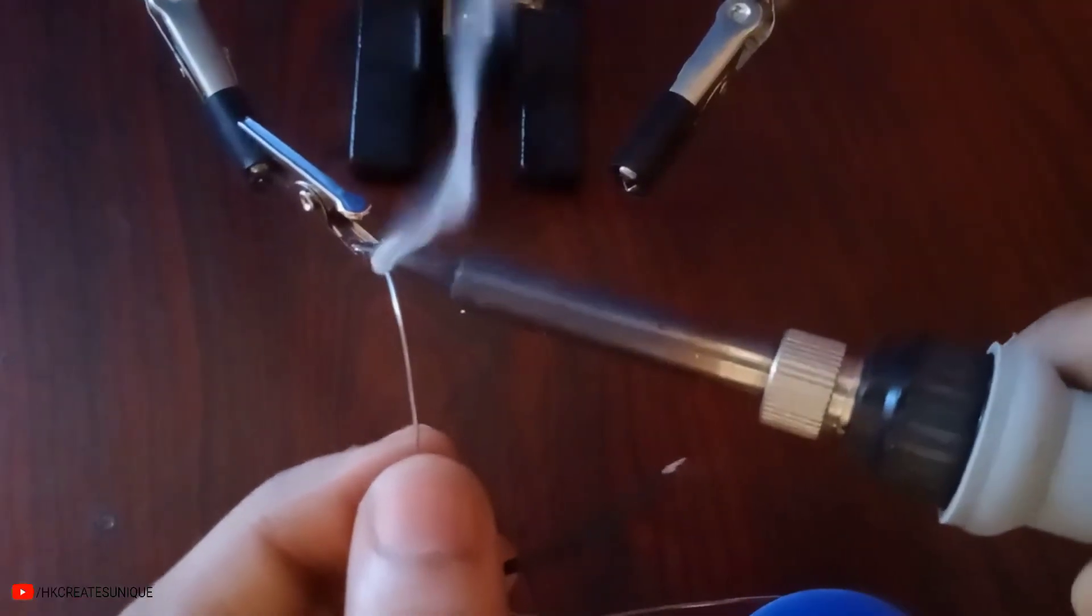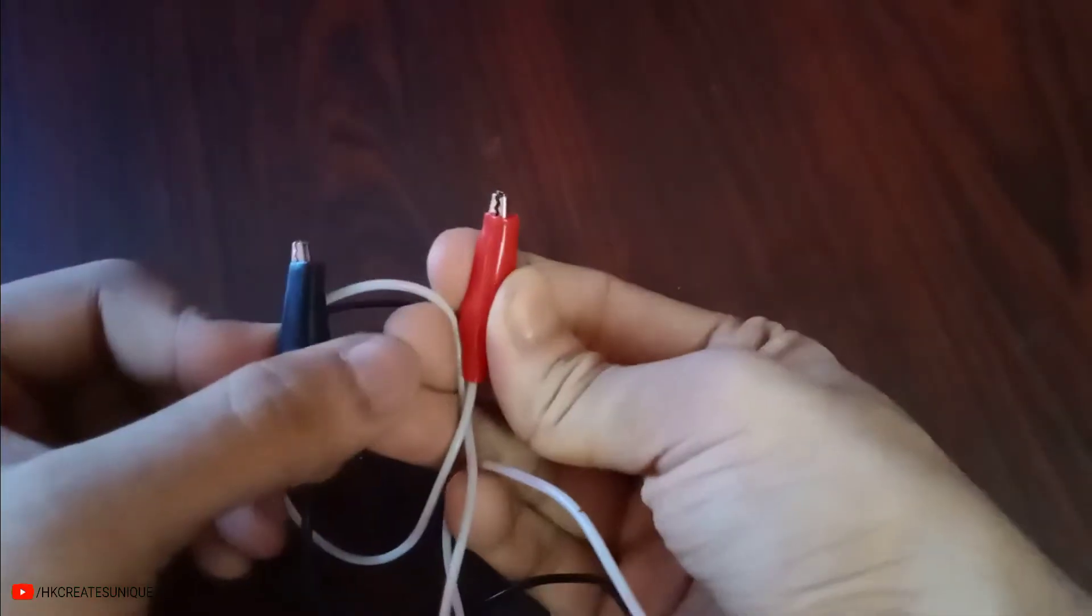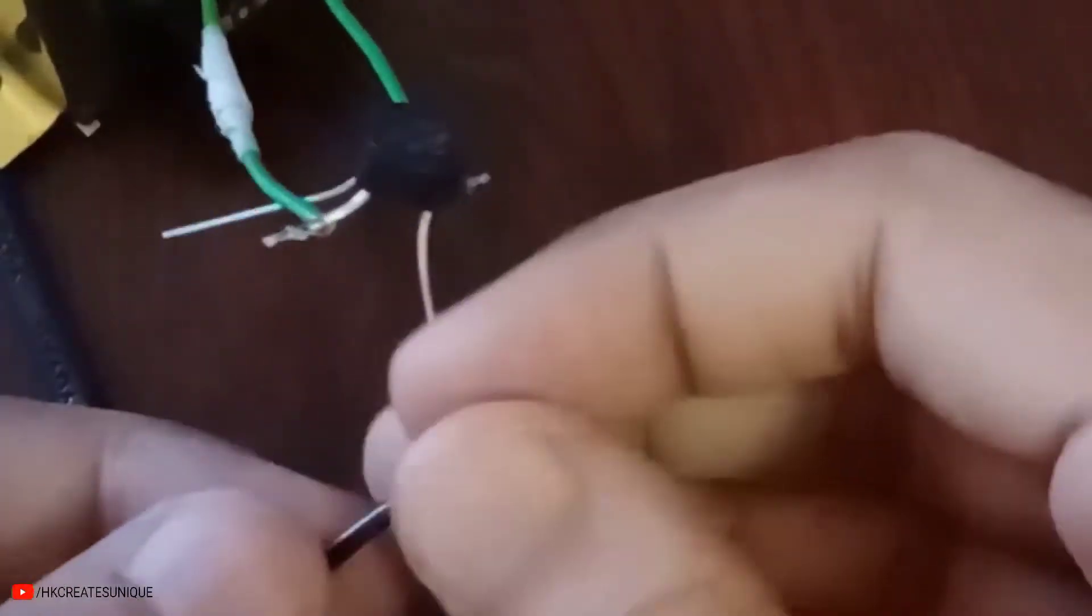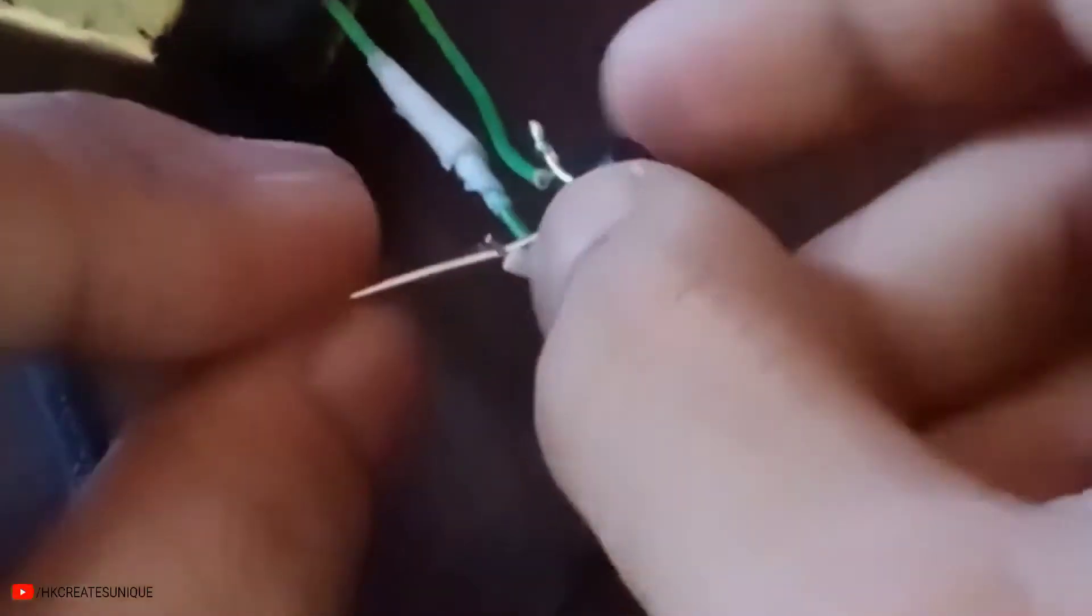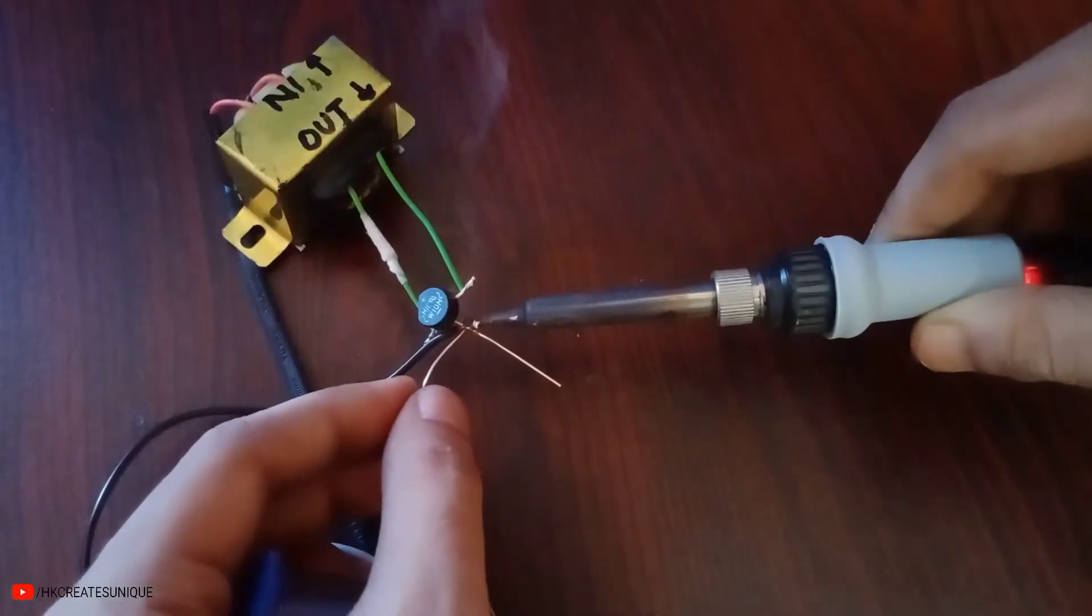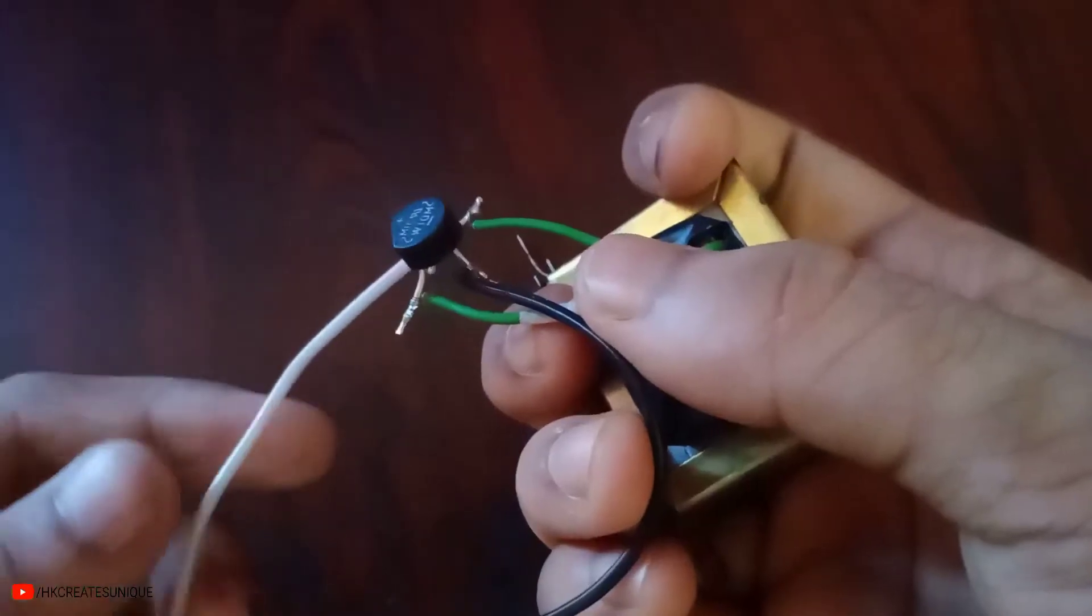I have already soldered a crocodile clip for each wire. Connect black wire to the negative terminal and white or red wire to the positive terminal. Solder each wire and cut the extra wires.